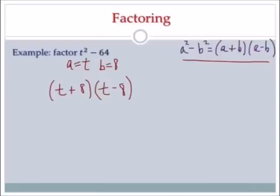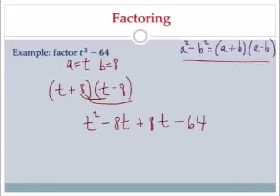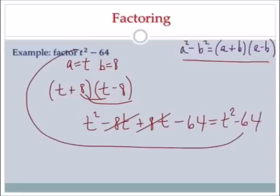I want to FOIL it just to check. t times t is t squared. t times negative 8 is negative 8t. Now I distribute the 8: 8 times t is positive 8t, and 8 times negative 8 is negative 64. Negative 8t plus 8t cancel, so I'm left with t squared minus 64, which is what I started with. So the final answer is (t plus 8)(t minus 8).